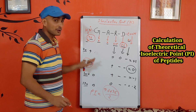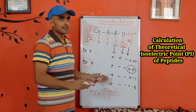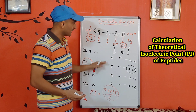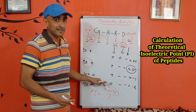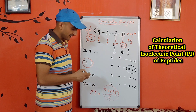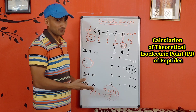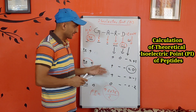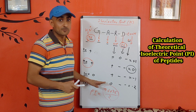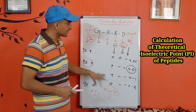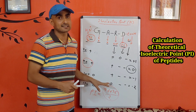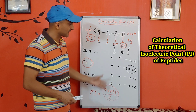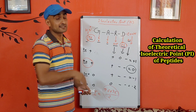This is the theoretical pI. Similarly, the theoretical pI of proteins or longer polypeptides can also be calculated, but that is a difficult task to do manually. There are many programs and tools available on the internet — you just enter your sequence and the tool will immediately give you the theoretical pI value using the same criteria we discussed here. Theoretical pI of peptides and proteins can be calculated using this pH titration method.